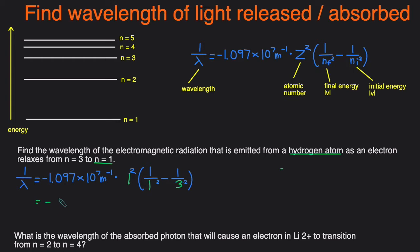And that gives you negative 9.75 times 10 to the 6 meters to the negative 1. This is negative right here because the light was emitted. So negative means that light was emitted and positive means that light was absorbed.